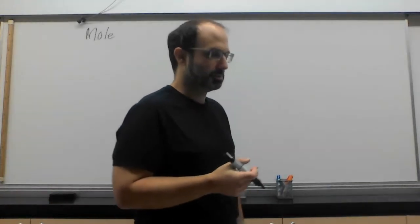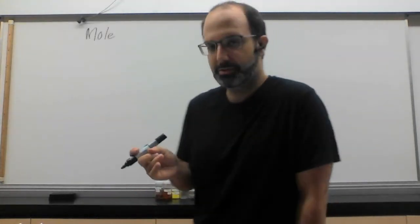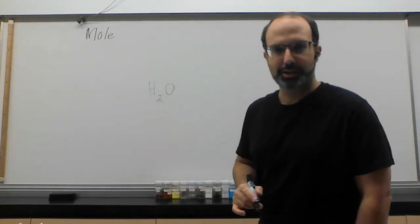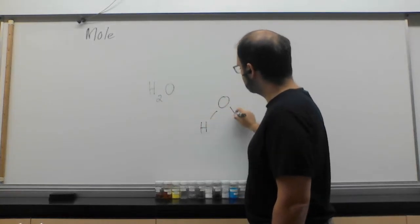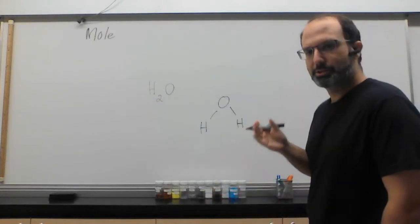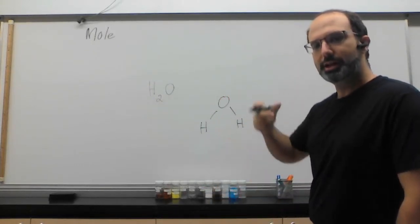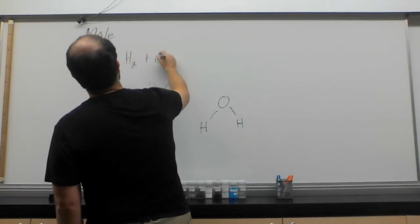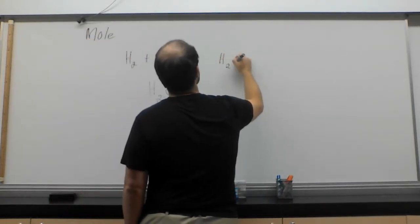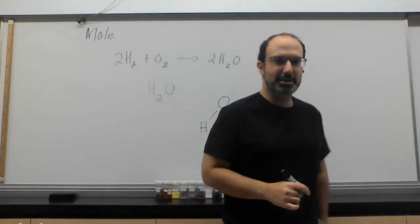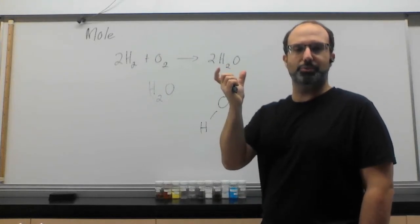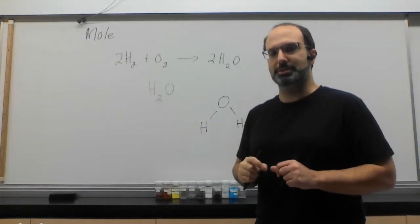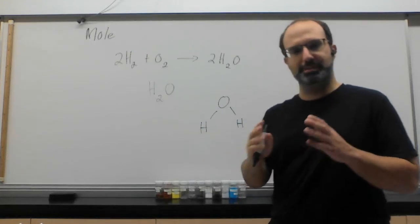Up until now, when we've been talking about chemistry, we talk about things in terms of individual atoms, right? Like, this is the chemical formula for water, and if I were to draw it, it would look something like this. And I show you this in the sense that there is one oxygen and two hydrogen. We're dealing with incredibly small amounts of things, which is good for the purposes of understanding things, but it's not helpful for the purposes of reality.